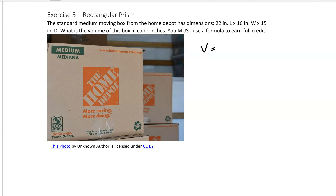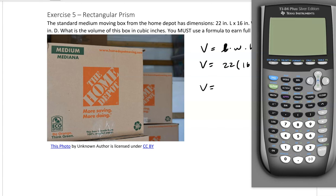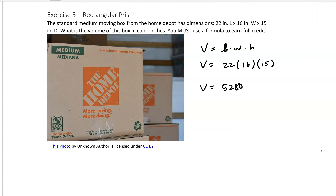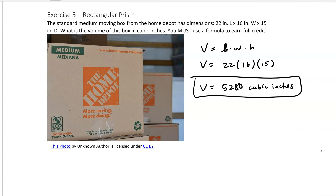Volume is equal to the length times the width times the height. So we have 22 times 16 times 15, which gives us 5,280 cubic inches. That is our volume for exercise 5.